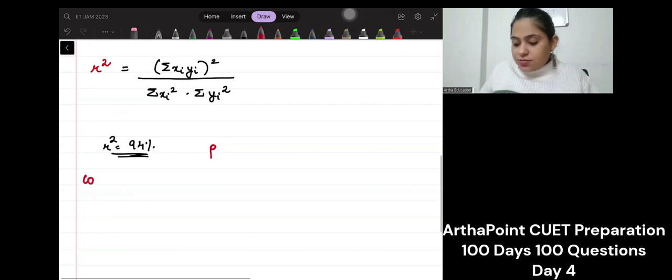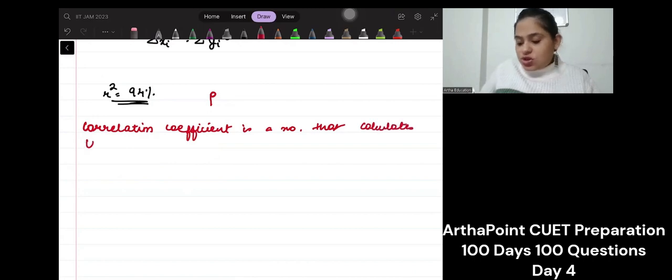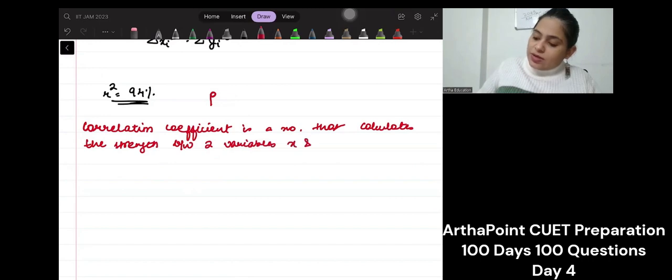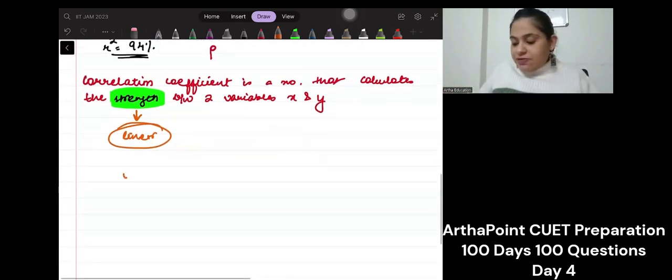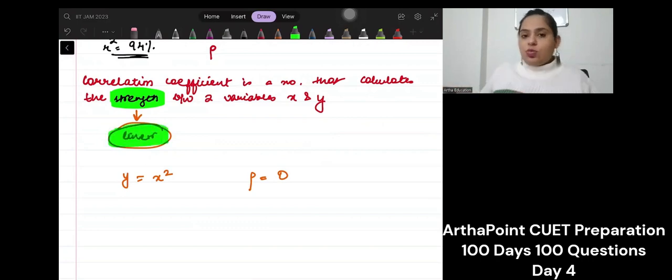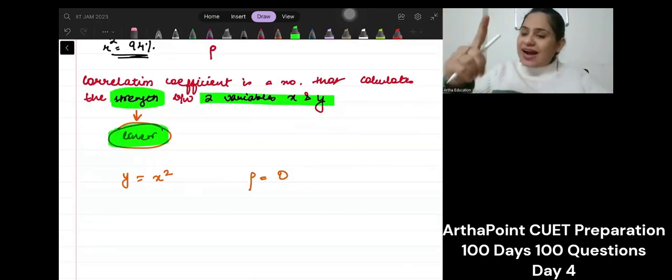Correlation coefficient is a number that calculates the strength between two variables x and y. This is linear strength. It cannot tell non-linear relationships. It can only focus on linear relationship. For example, if I have y equals x square, my correlation coefficient will be zero. I can only estimate linear relationship between any two variables. That is correlation coefficient.